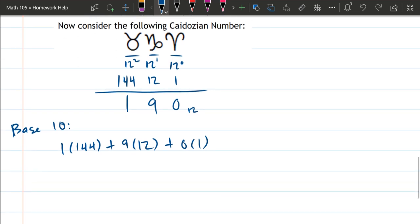And then we just multiply these out right here. 1 times 144 is 144, 9 times 12 is 108, and 0 times anything is 0.